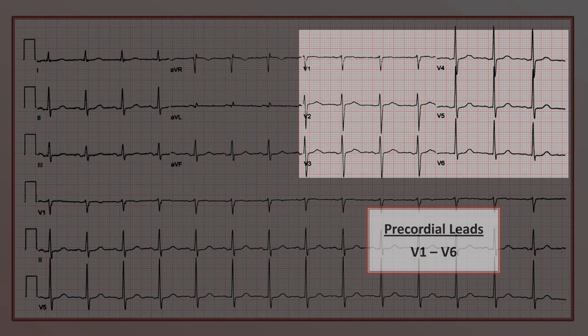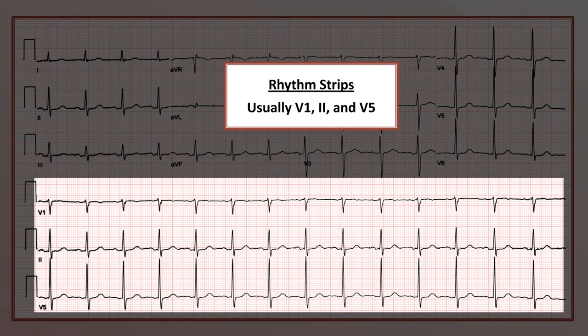Finally, on the bottom half of the EKG are the rhythm strips. Unlike the top half of the EKG in which each lead is recorded for 2.5 seconds, the bottom half shows 10 continuous seconds of three specific leads. This specifically helps with the identification of unusual rhythms, particularly those that are irregular.